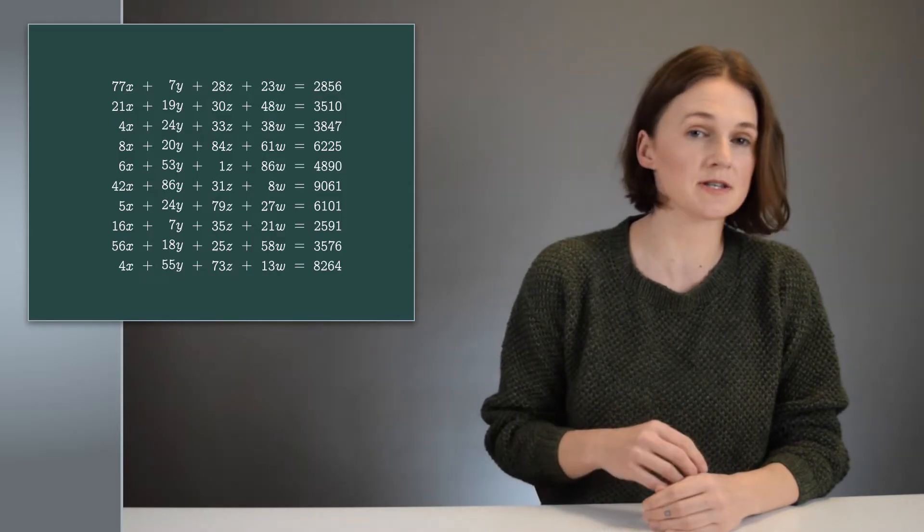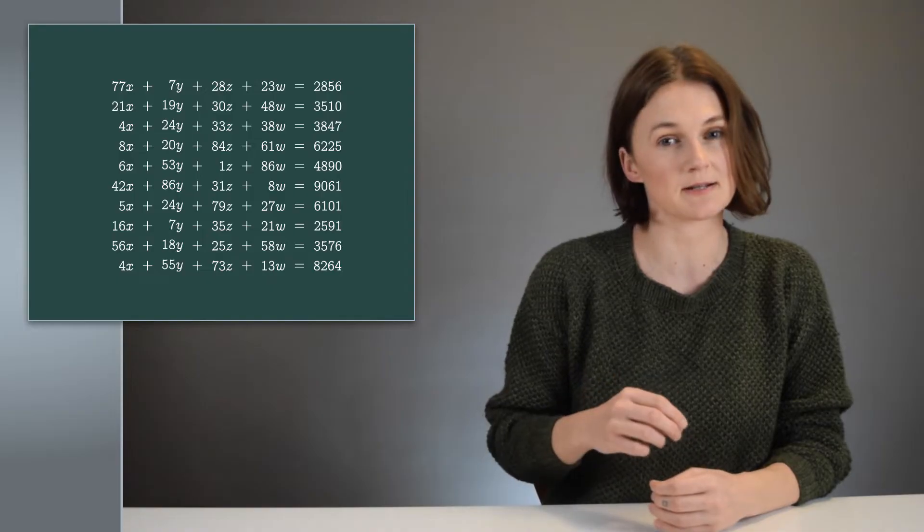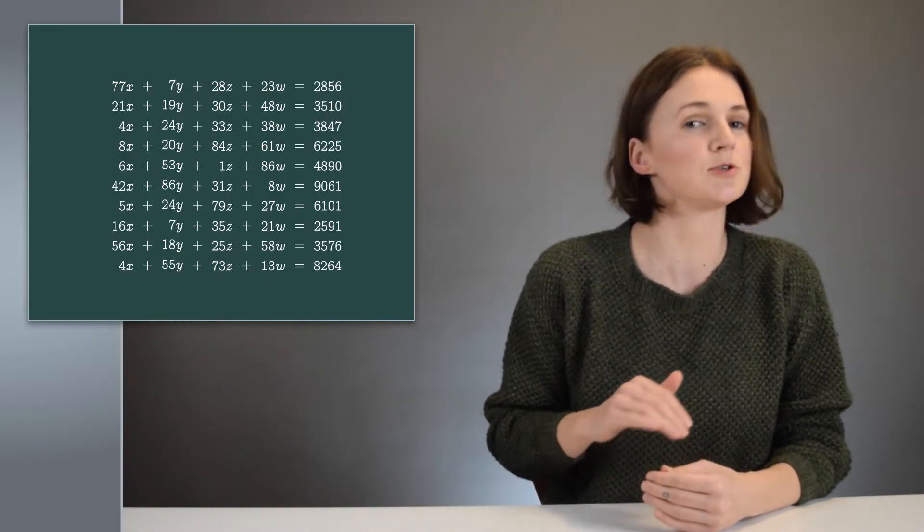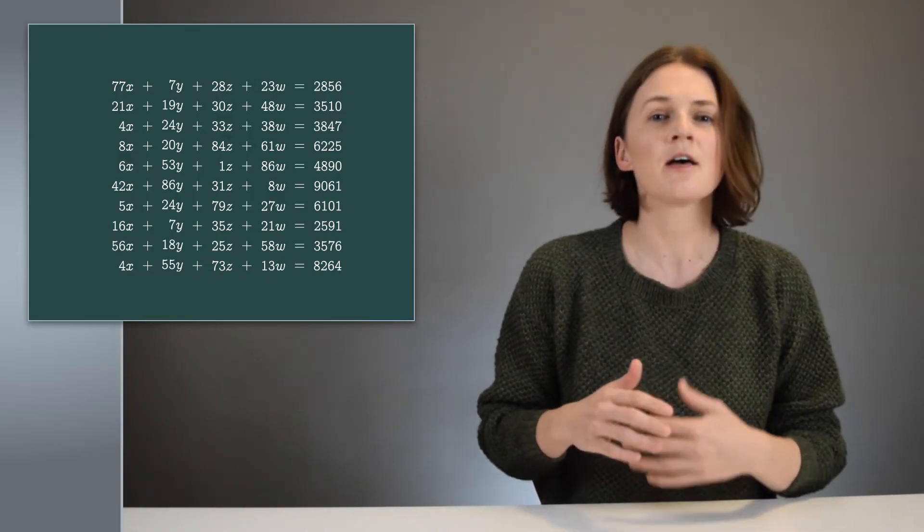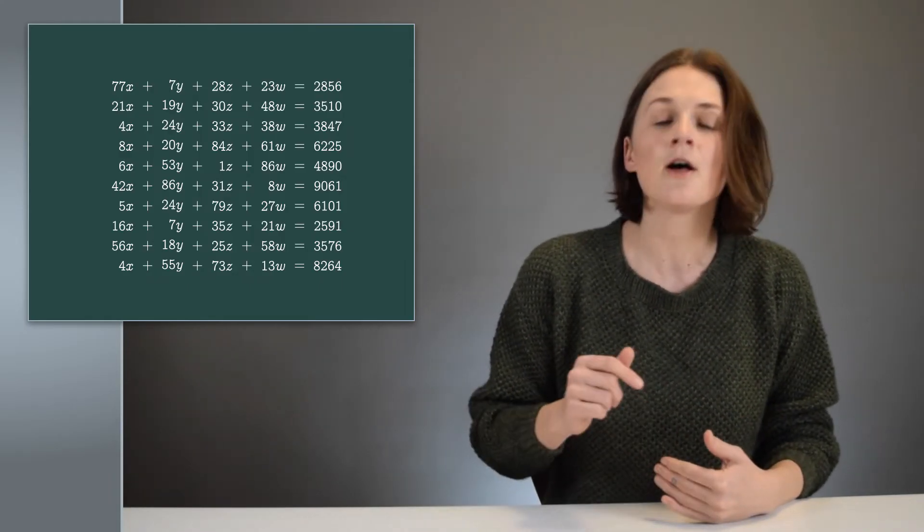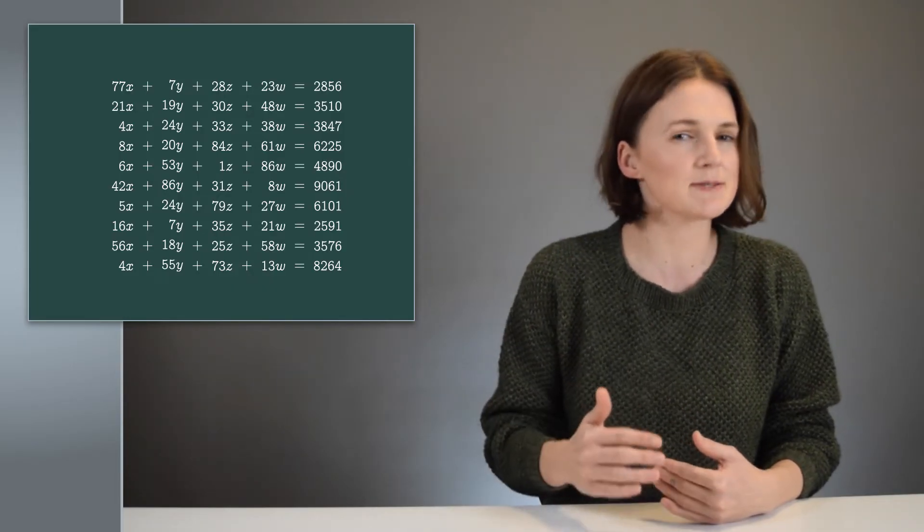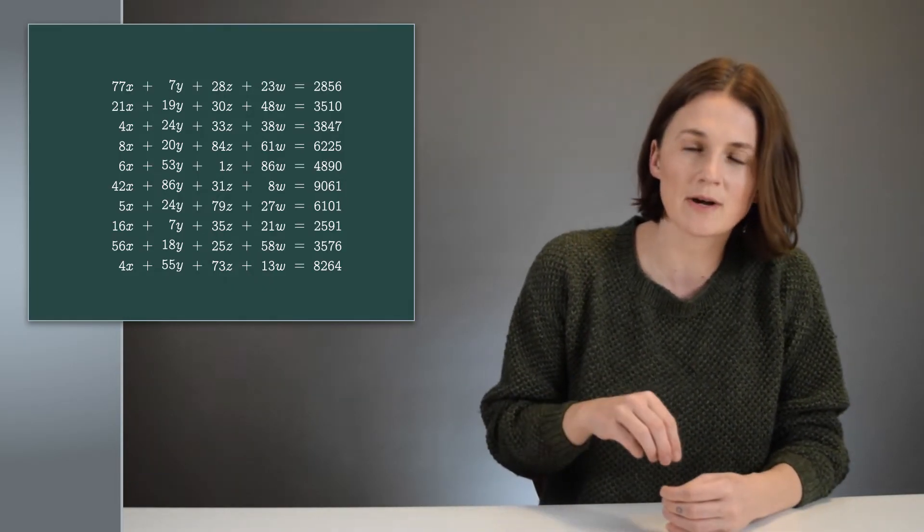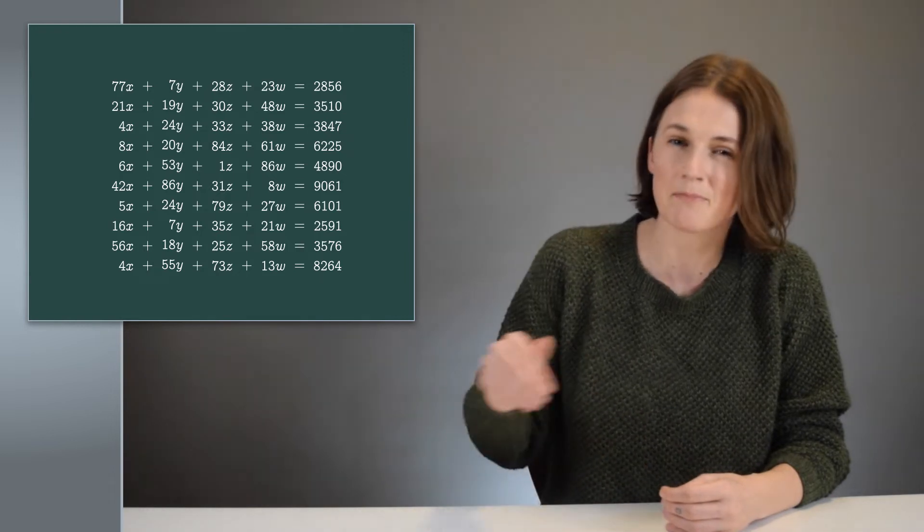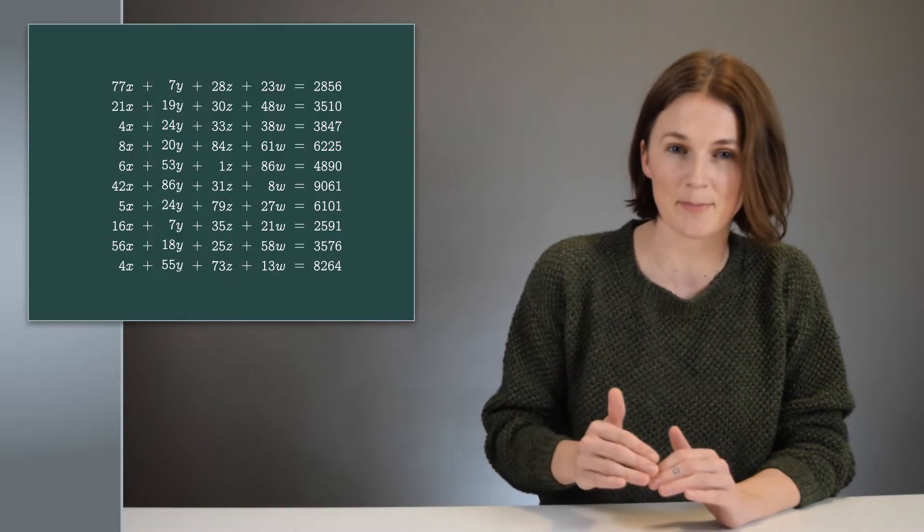It has more equations than variables. Sometimes this is called an overdetermined system. And this type of system usually doesn't have a solution. There are simply too many equations constraining the values of the variables. The previous equations, the ones without the errors, were very special. Our equations were created from a solution. We went backward, so of course it had a solution. But that doesn't usually happen.